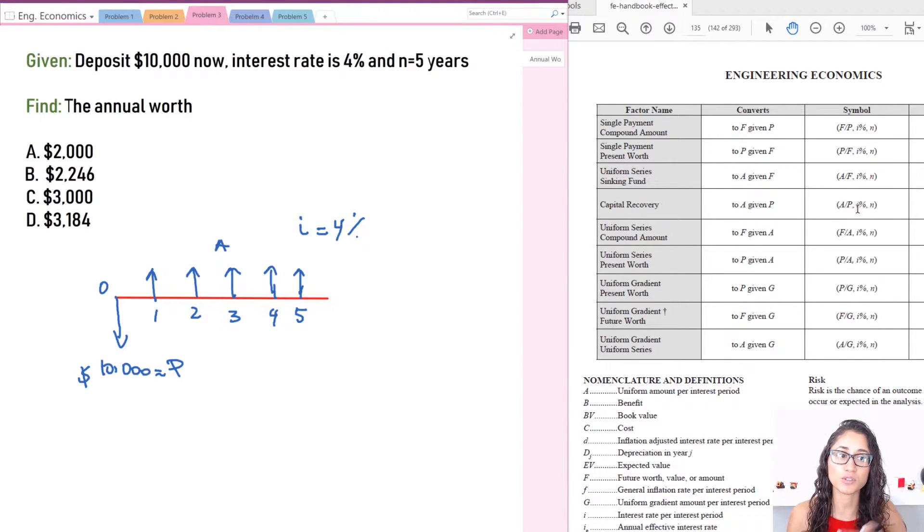But I also recommend that you know how to use both. It's very important in case you were not given the I or the interest rate that is on the tables.